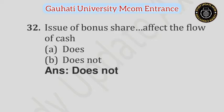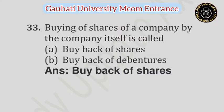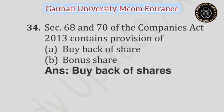Question number 32: Issue of bonus shares does affect the flow of cash — Option A: Does, Option B: Does not. Answer is Does not. Question number 33: Buying of shares of a company by the company itself is called — Option A: Buy back of shares, Option B: Buy back of debentures. Answer is Buy back of shares. Question number 34: Sections 68 and 70 of the Companies Act 2013 contain provisions of — Option A: Buy back of shares, Option B: Bonus shares. Answer is Buy back of shares.